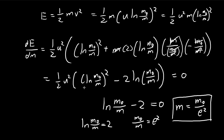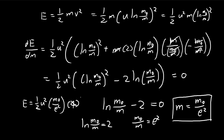We can substitute this back into the energy expression to find the corresponding maximum energy. Substituting m equals m0 over e squared, the natural log of m0 over m becomes natural log of e squared, which equals 2. So 2 squared equals 4. The final maximum energy is given by this expression.